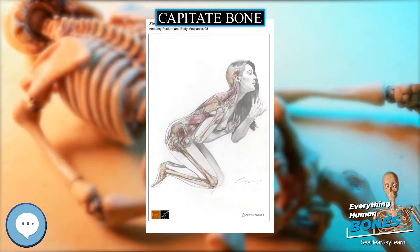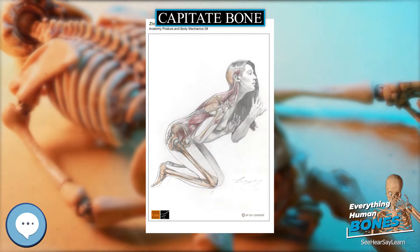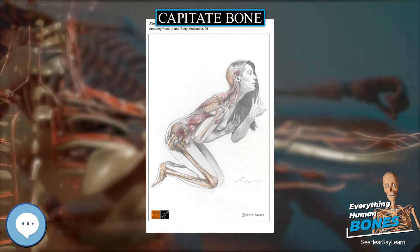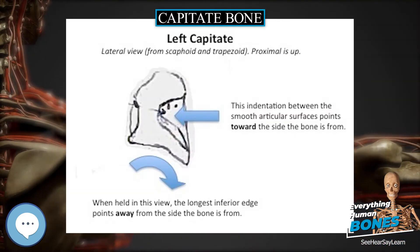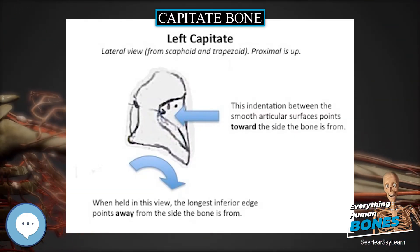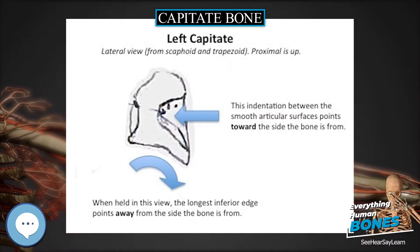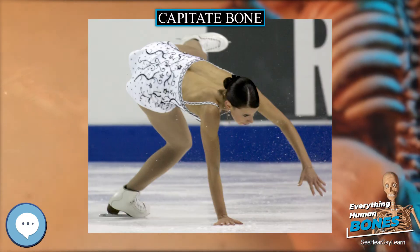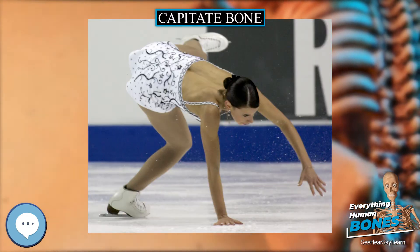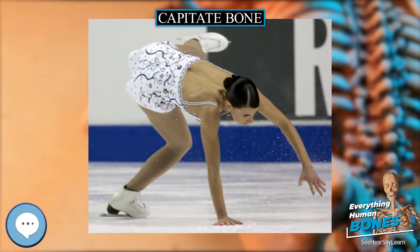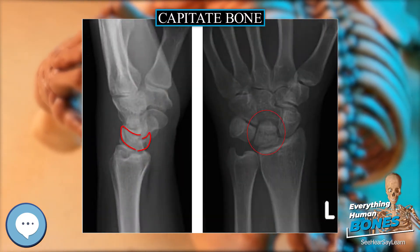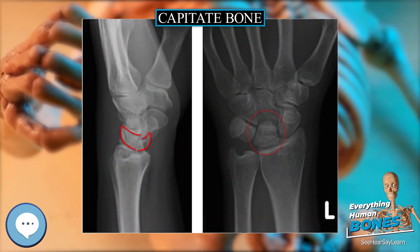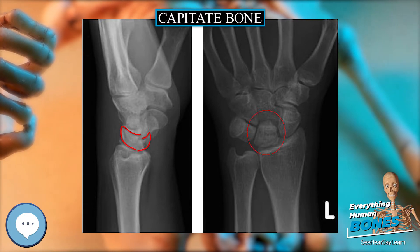The dorsal surface is broad and rough. The palmar surface is narrow, rounded, and rough, for the attachment of ligaments and a part of the adductor pollicis muscle. The lateral surface articulates with the lesser multangular by a small facet at its anterior inferior angle, behind which is a rough depression for the attachment of an interosseous ligament.